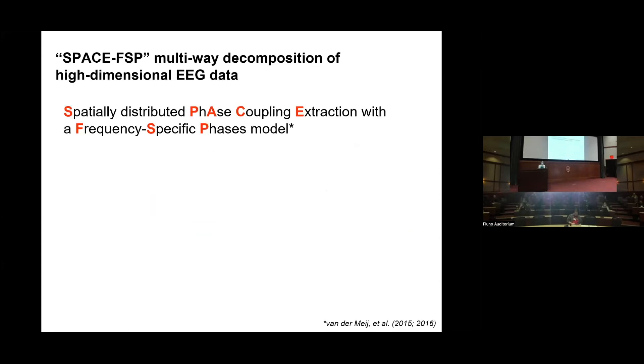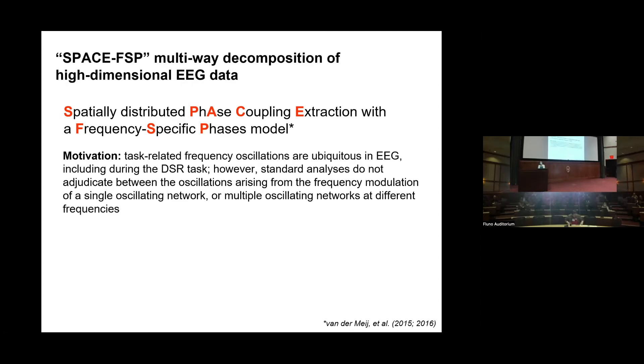In our current work we want to investigate the role of these neural oscillations, and we chose to leverage an analysis called spatially distributed phase coupling extraction with a frequency-specific phases model—we'll just call it SPACE for short, or SPACE-FSP. This particular analysis is a multi-way decomposition of the high-dimensional EEG data. We have 60 channels happening over an extended period of time over many trials. The reason why we're interested in applying this method is that standard analyses do not adjudicate between oscillations arising from frequency modulation of a single network or multiple oscillating networks at different frequencies.